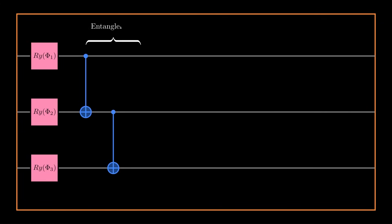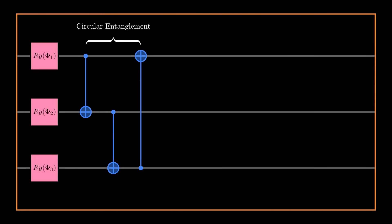The second component of a hidden layer is the entanglement block. Entanglement is a key quantum property, something which is difficult to simulate classically, and hence it's used in a quantum neural network. When every qubit is entangled with its successive qubit, it's called linear entanglement. If we entangle the last qubit with the first qubit, it forms a complete circle, and hence it's termed circular entanglement. If every qubit is entangled with all of its successive qubits, this type of entanglement is called full entanglement.